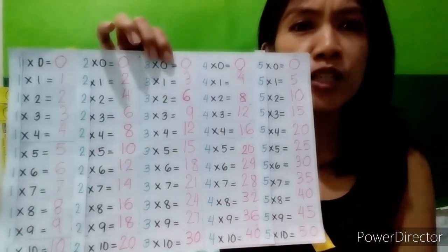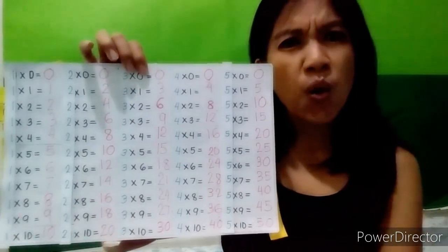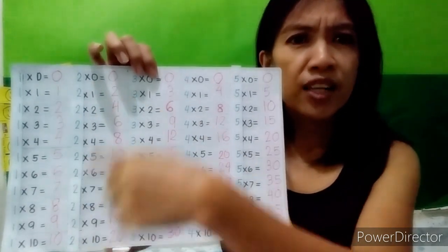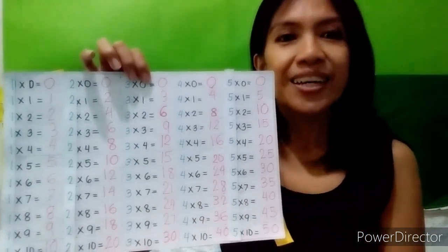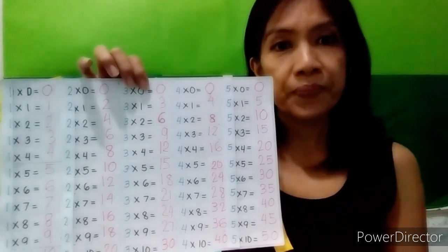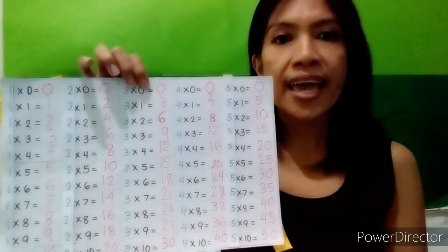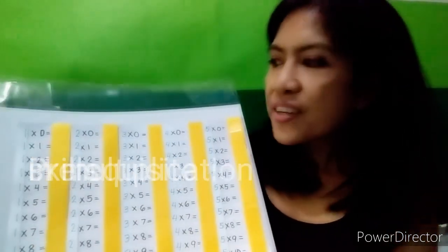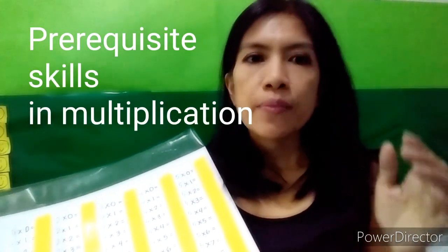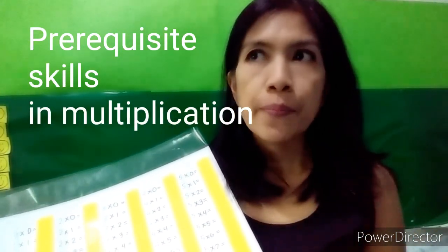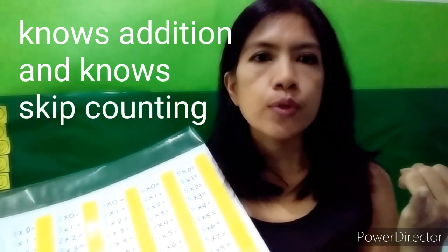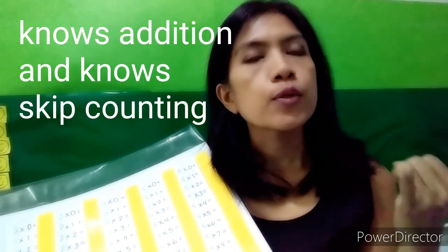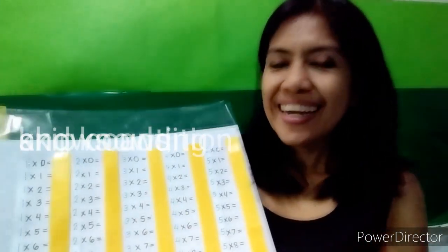Sometimes kids don't understand how an answer is arrived at, so let's show the solution and how the answer is given. By the way, the prerequisite for multiplication is that the child knows how to add and how to skip count.